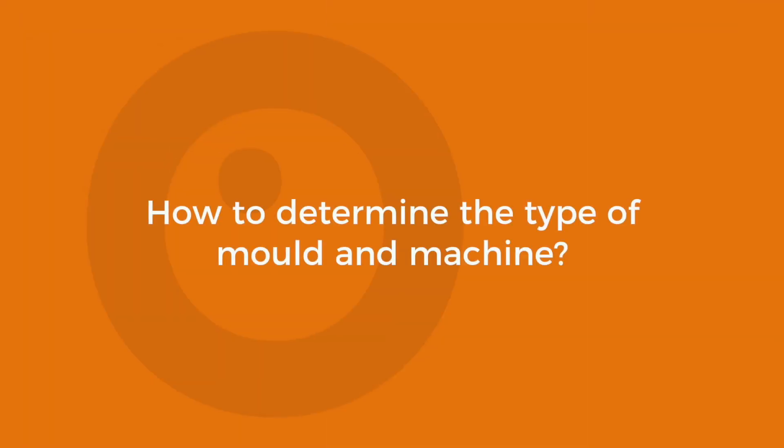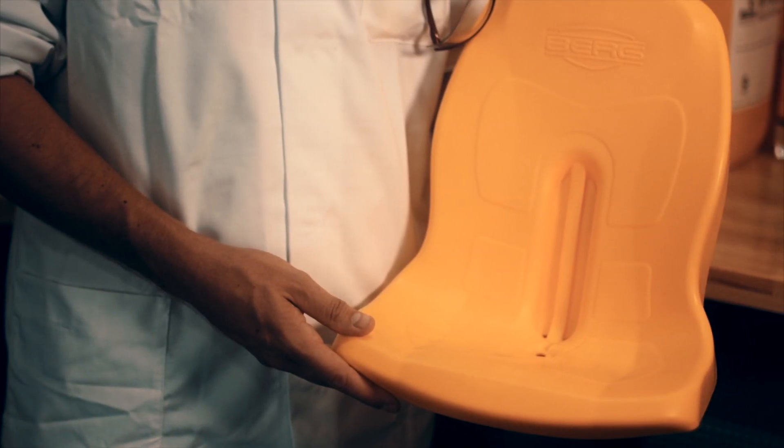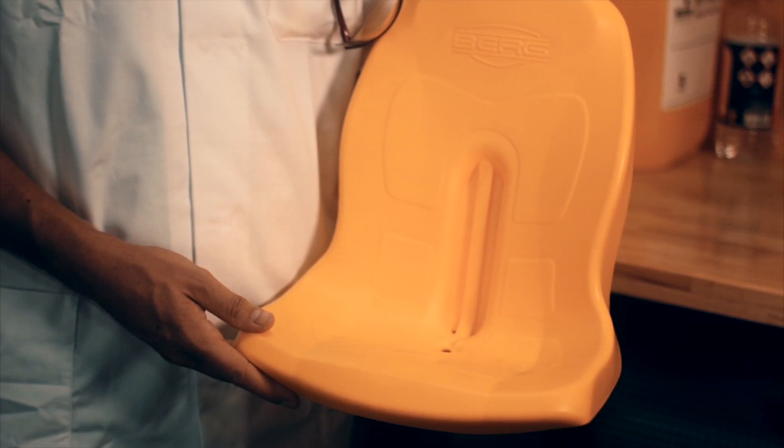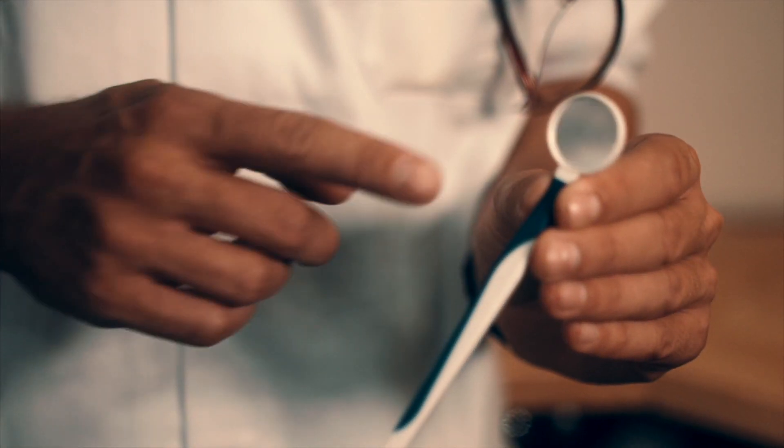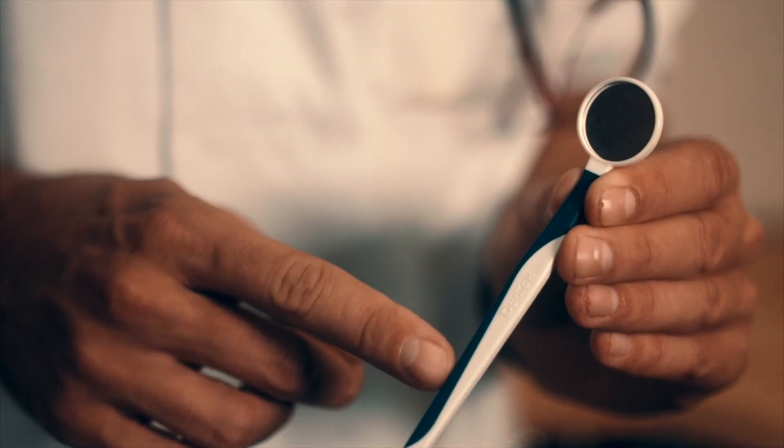How do you determine what kind of mould and machine you need? A large product often requires a large machine with high pressure and a big mould. For smaller-sized products, a smaller mould and a low-pressure machine are sufficient.